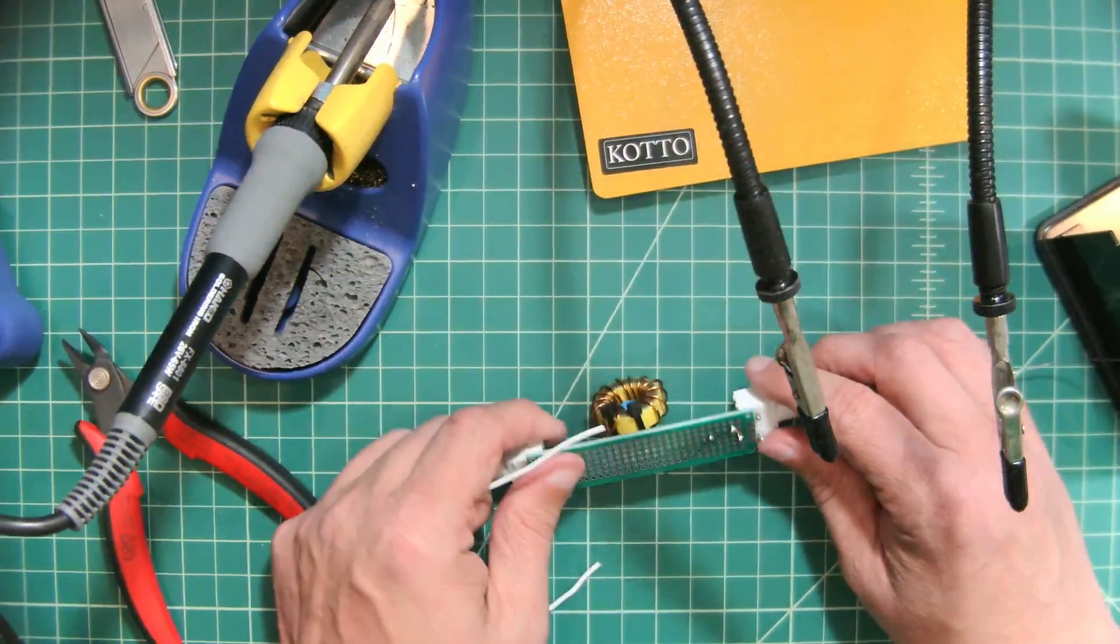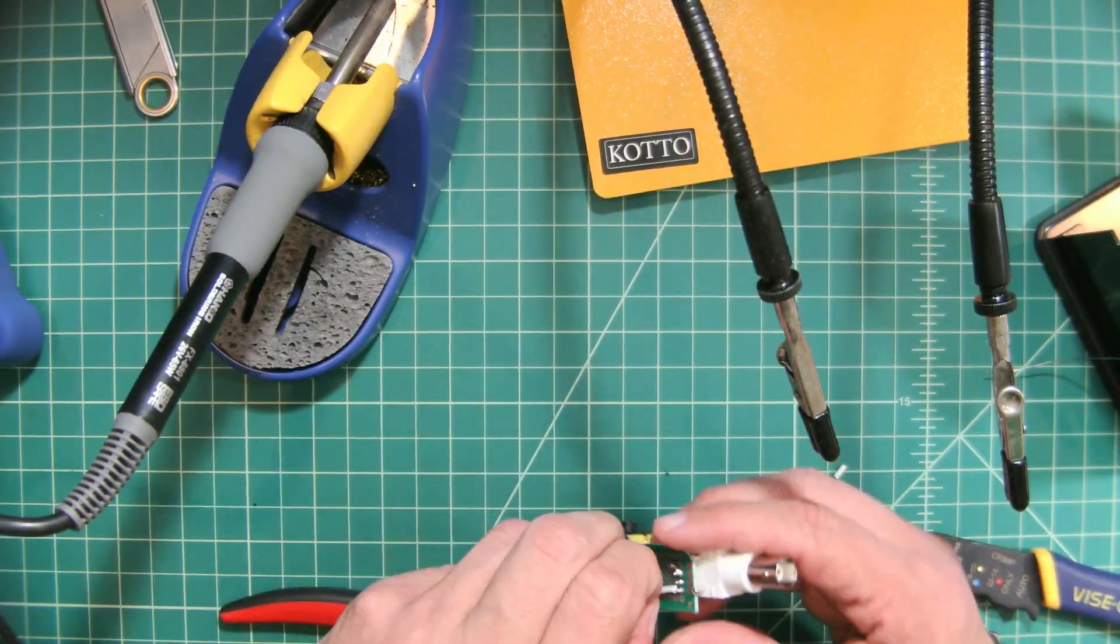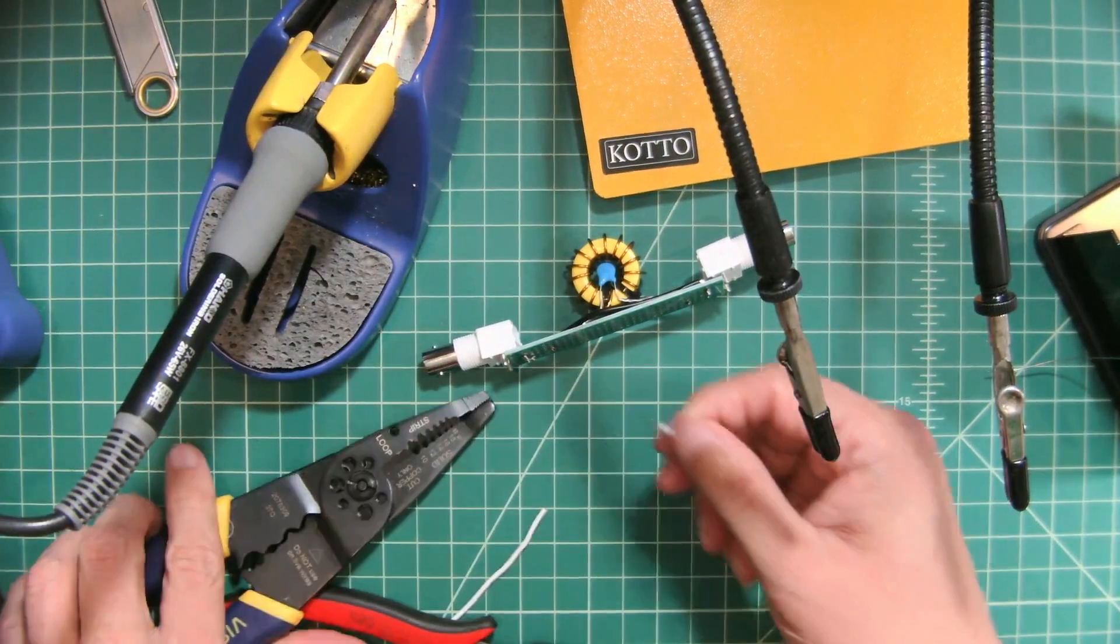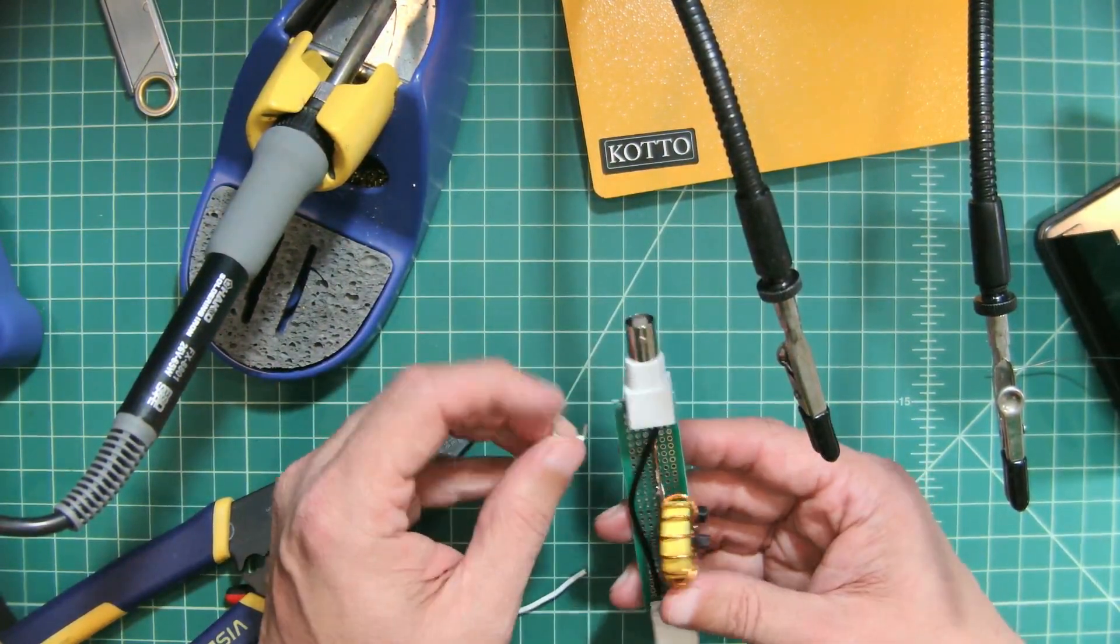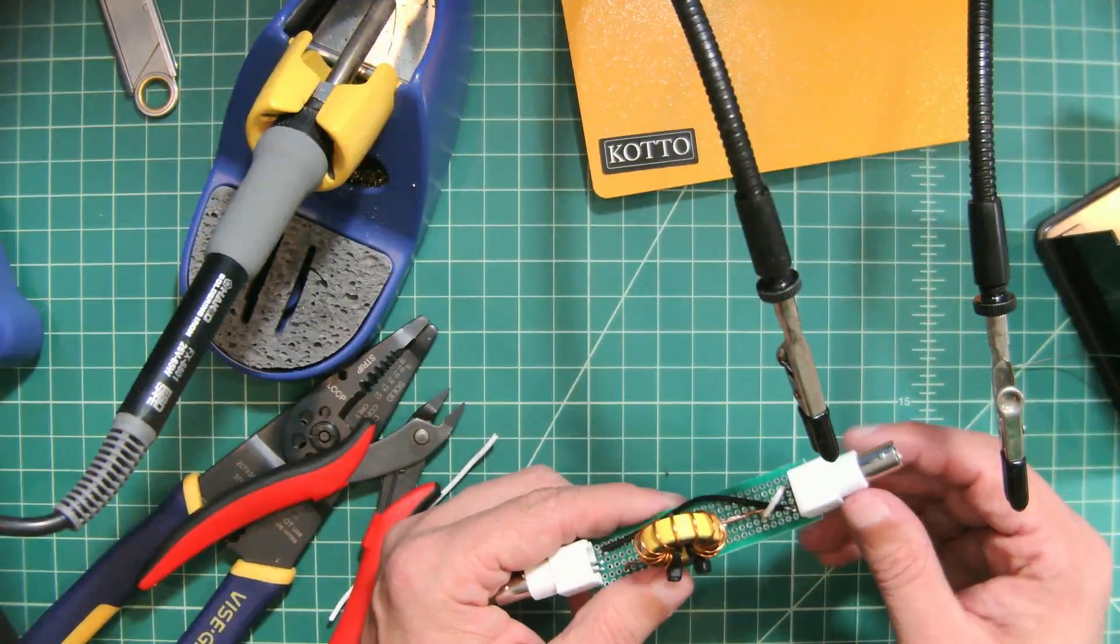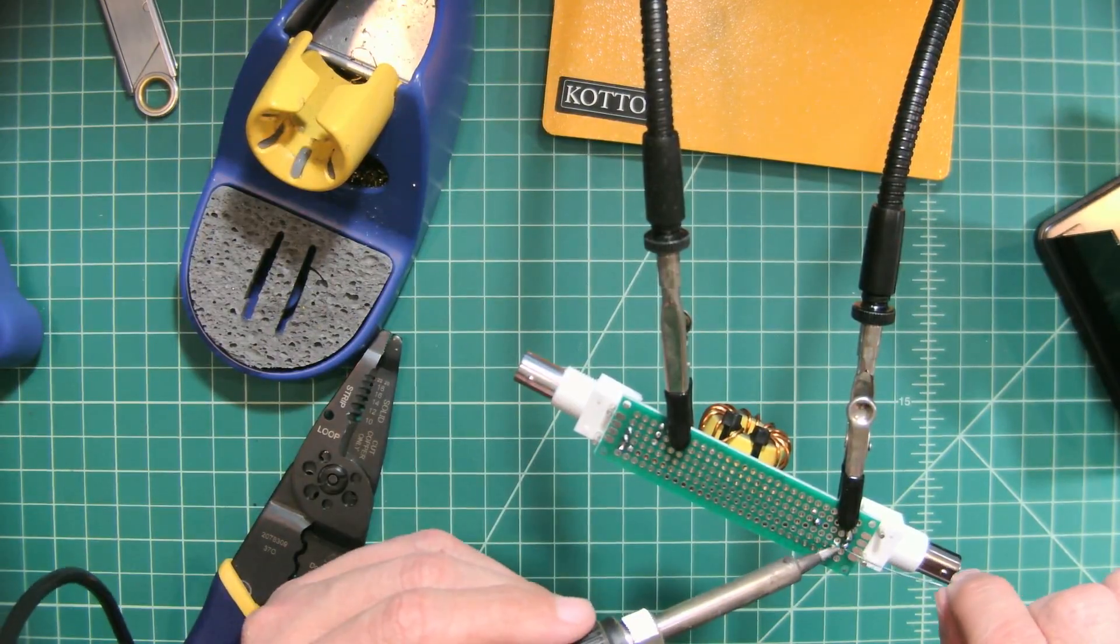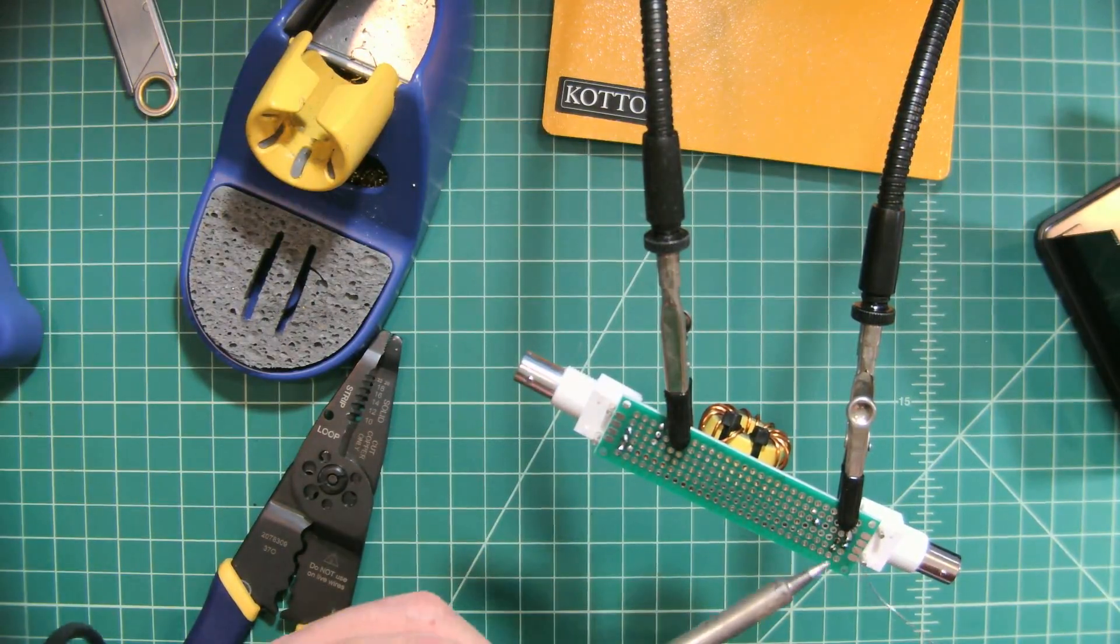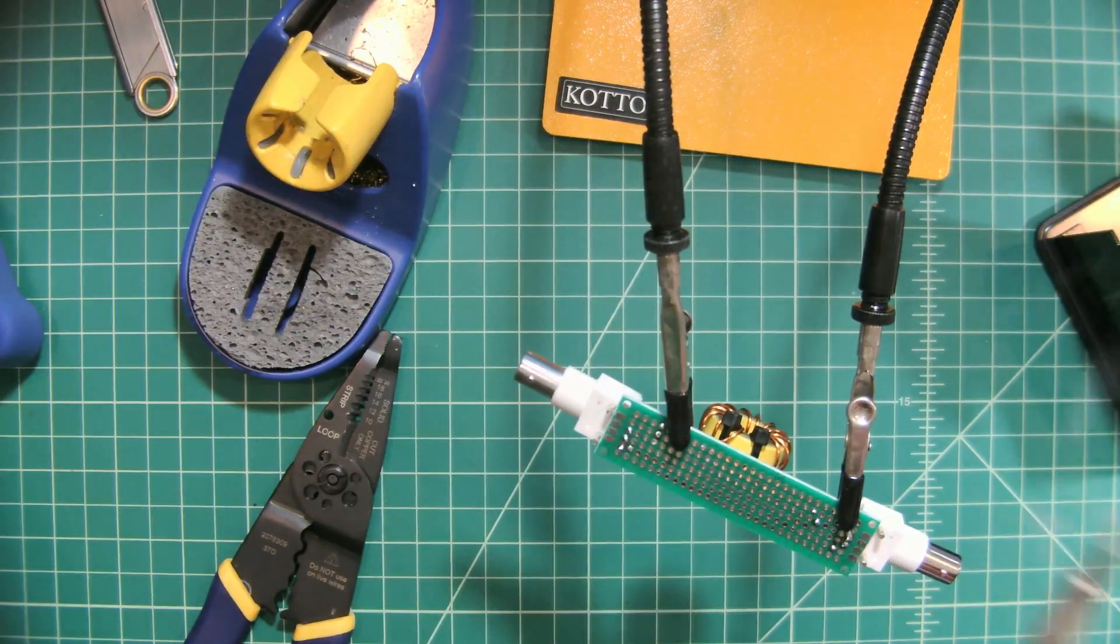All right, let's cut a jumper for this one. And we got it. Okay, so I'm just going to solder that jumper in and then we're going to bridge the two solder points right here. Pretty simple stuff.